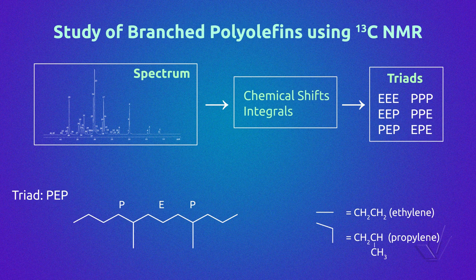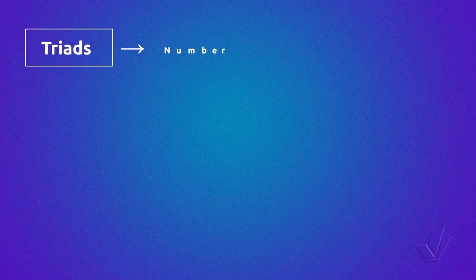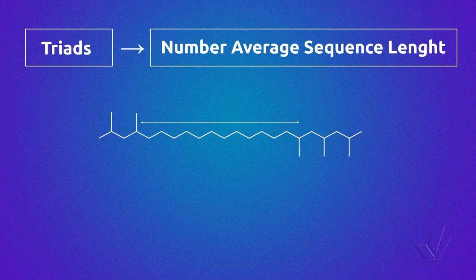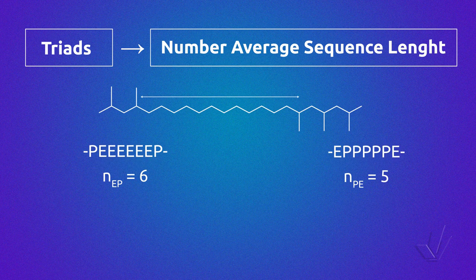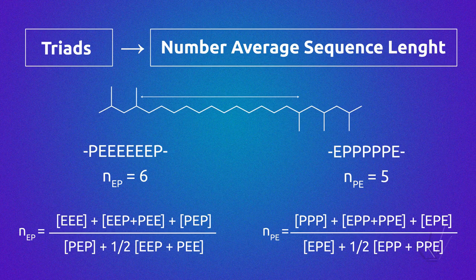In the example shown here, we can see a triad PEP of an ethylene-propylene copolymer. The triad sequence can also give us information about how many units of one copolymer are between the units of the other comonomer. That is called the number average sequence length. In the example shown here, there are six ethylene units between propylene units and five propylene units between ethylene units.